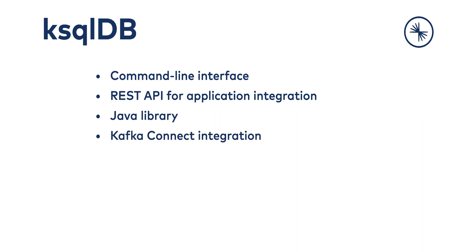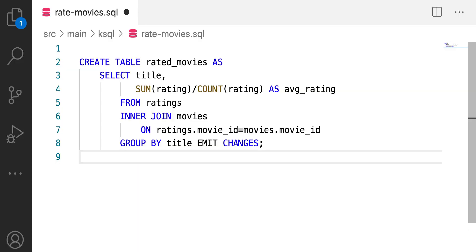Additionally, KSQL DB provides an integration with Kafka Connect, allowing you to connect to external data sources from within the KSQL DB interface. You can actually create a connector with a statement called, mysteriously, CREATE CONNECTOR, which runs Kafka Connect either embedded inside the KSQL DB cluster, or if you already have a standalone Kafka Connect cluster, you can tell KSQL DB to go use that one. And you get to configure Kafka Connect from within this SQL environment.